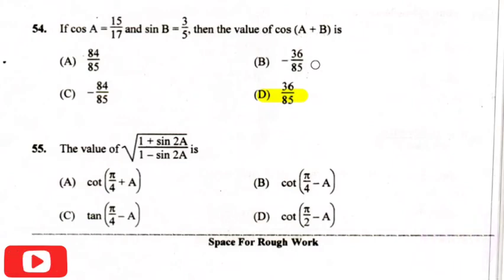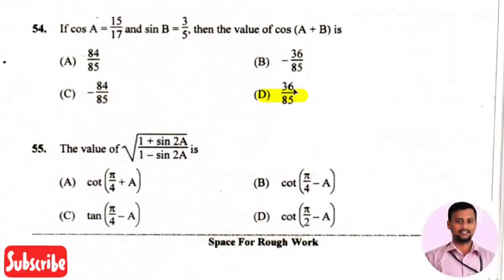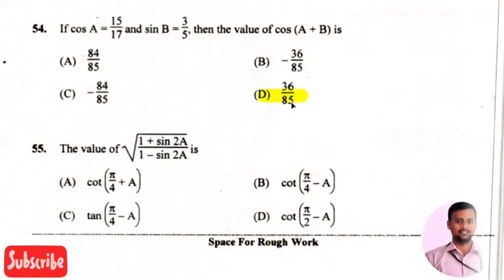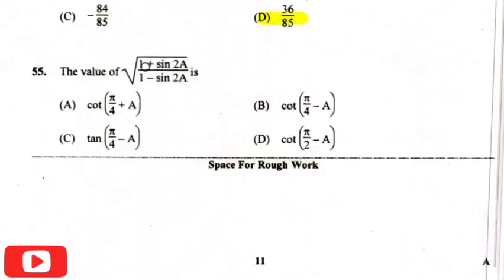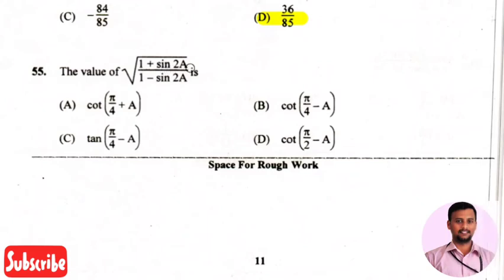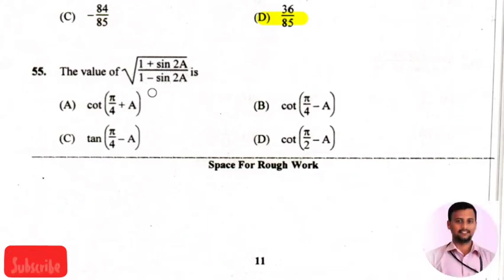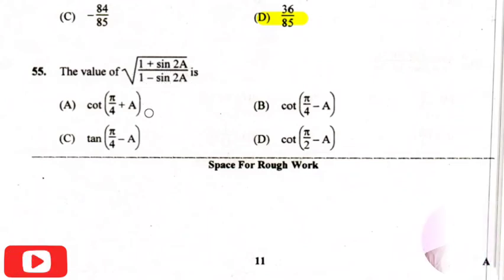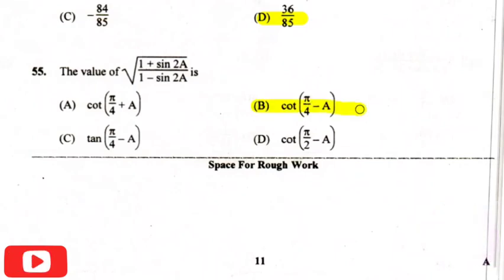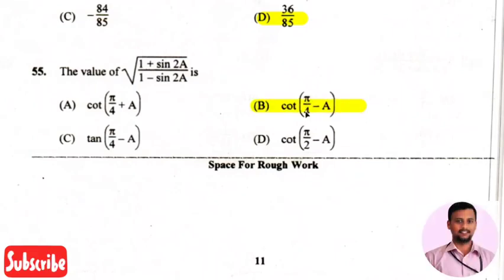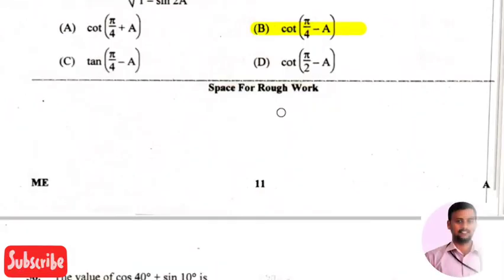The next question is the value of the square root of (one plus sine two A) divided by (one minus sine two A) — the right answer is option two, that is cot (pi by four minus A).